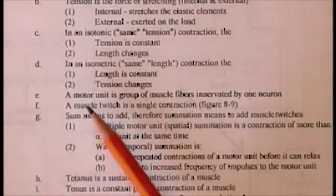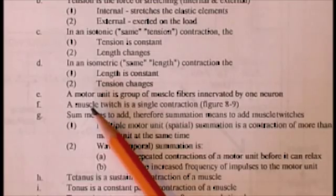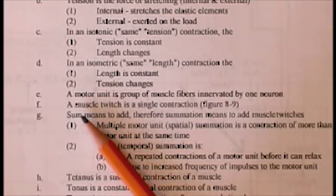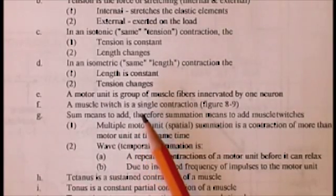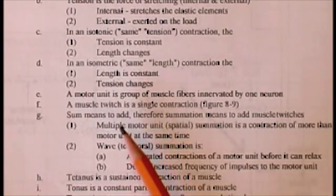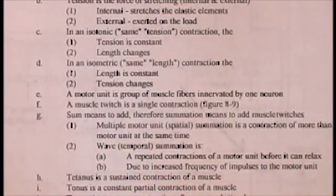Another idea to understand with muscle contraction is the idea of a motor unit, also found on page 8.12 in your study guide. A motor unit is pretty straightforward. It's a group of muscle fibers innervated by a single neuron.